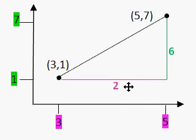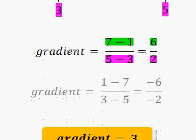The calculation, if the numbers were really big, would be the distance moved up is 7 take away 1. And the distance moved across is 5 take away 3. Anyway, so the gradient is 6 divided by 2, which is 3.